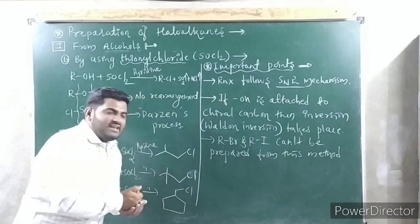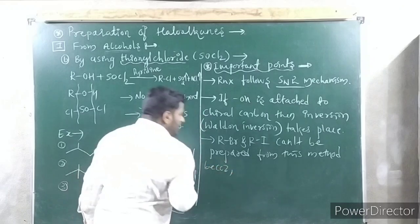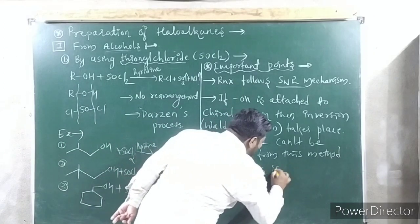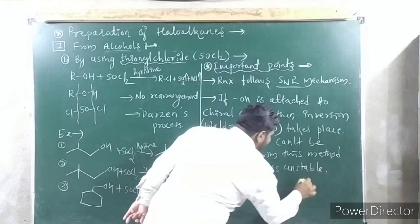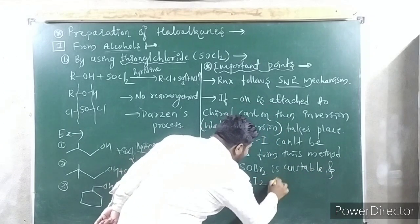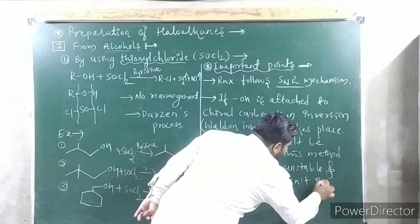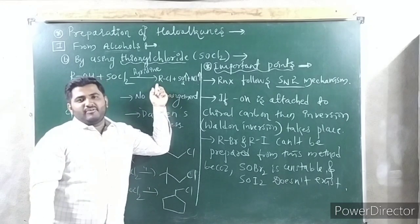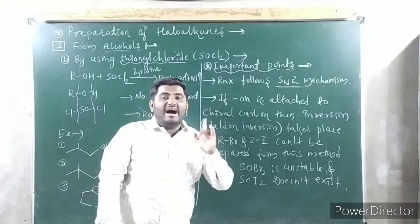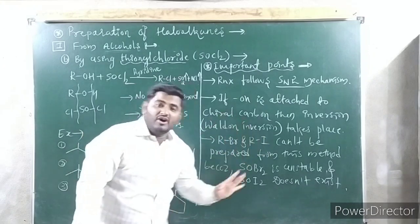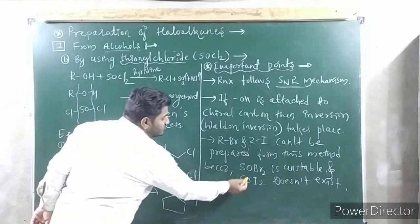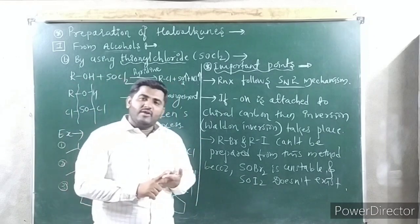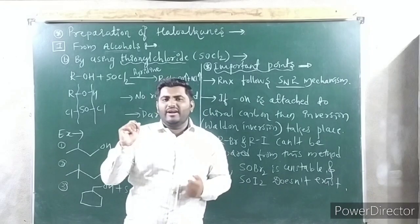So how can you use SOBr₂ or SOI₂ if they are unavailable or unstable? Therefore, only chloroalkanes (alkyl chlorides) can be prepared from this method — not bromoalkanes or iodoalkanes. These are the important points regarding this second method: from alcohols using thionyl chloride (SOCl₂). Remember: 'thio' is a nickname for sulfur.